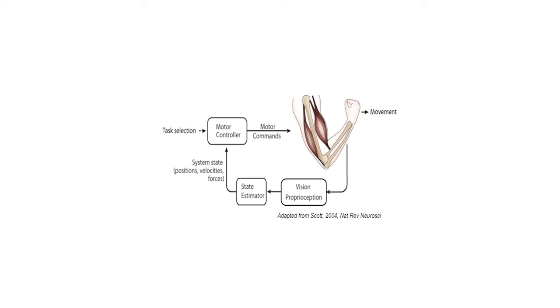We're going to select that task and pass it to some kind of motor controller — and by motor controller I'm really talking about our brain, the part of the brain that controls movement. That's going to issue some kind of motor commands that go to this very highly non-linear thing that hangs off the side of our body, which is then going to make some kind of movement. It wouldn't be a reasonably good control system if we didn't have feedback. We have lots of different ways to get feedback — I'm going to talk a little bit about vision and proprioception today — and then we can iterate through this control loop, fix errors that we make, and move along.